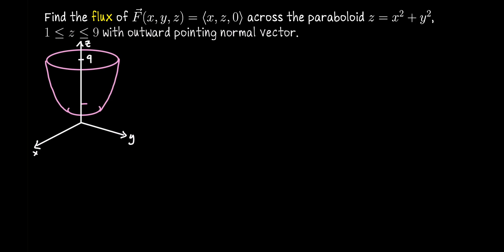So the paraboloid goes from z equals 1 through z equals 9. And as we set up our flux calculation, we're going to keep in mind that this paraboloid is oriented with outward pointing normal vector.